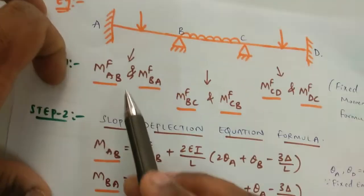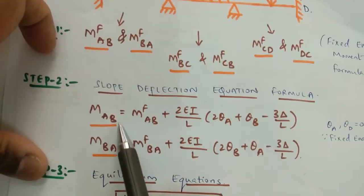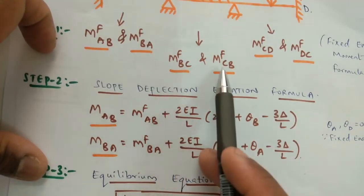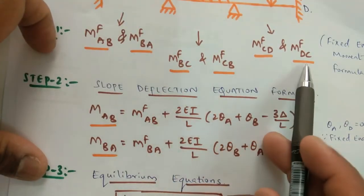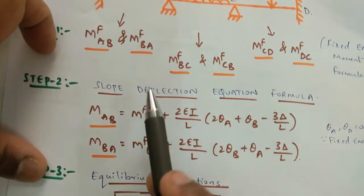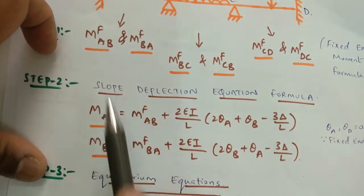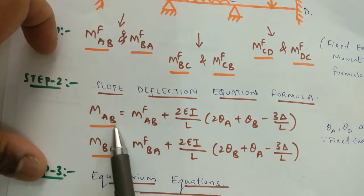The final moments obtained are MAB, MBA, MBC, MCB, MCD, and MDC. Note that MFAB refers to the fixed end moments, whereas MAB, MBA, and so on are the final moment values.